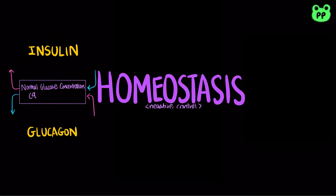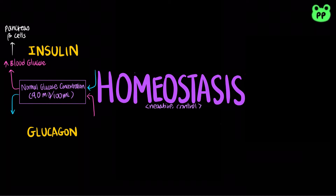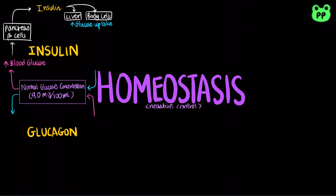The human body's normal glucose concentration is 90 milligrams per 100 milliliters. When blood glucose level rises, the beta cells in the islets of Langerhans in the pancreas produce insulin, which triggers glucose uptake in liver and body cells, as well as glycogen storage in liver cells.